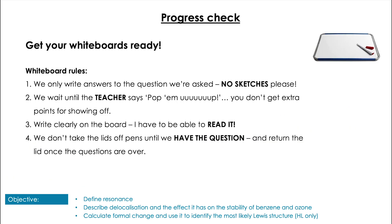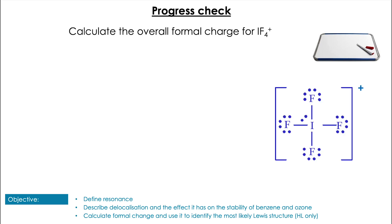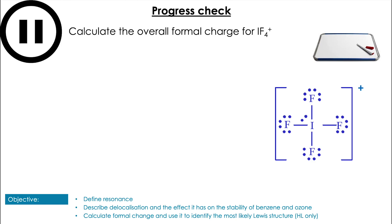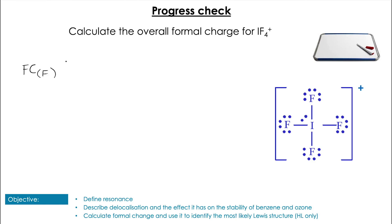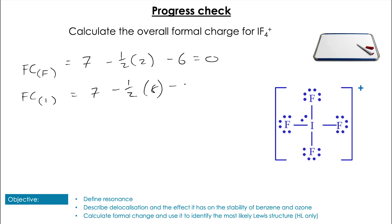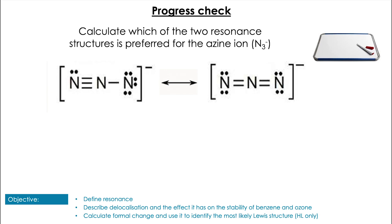Let's do a couple of practice questions to wrap up. First: calculate the overall delta FC for IF4 plus — pause the video and have a go. All the fluorines are in the same condition: 7 minus half of 2 minus 6, which is zero. Iodine has 7 minus half of 8 minus 2 because it has a lone pair, which is plus one. So our overall delta FC is plus one minus zero, which is plus one.